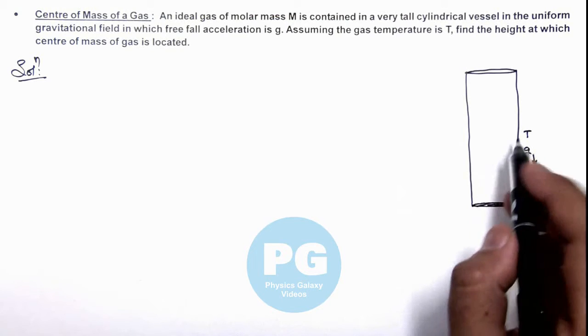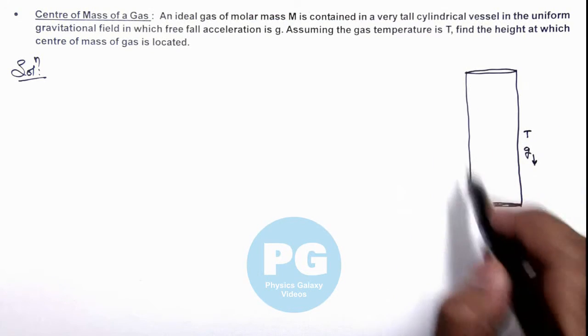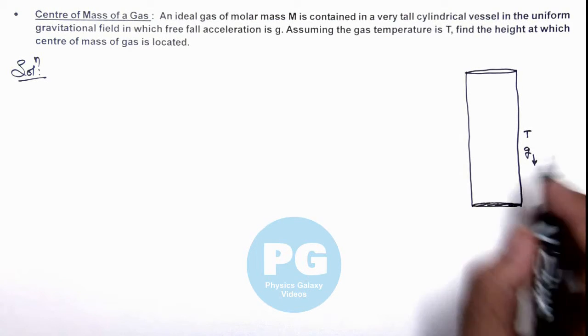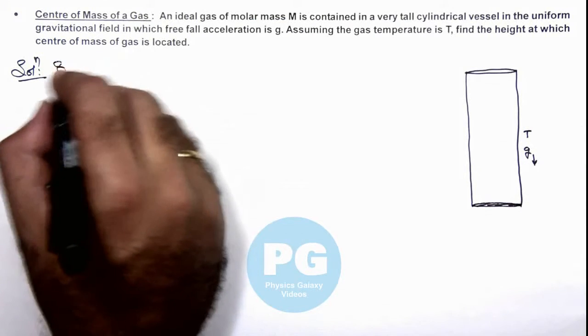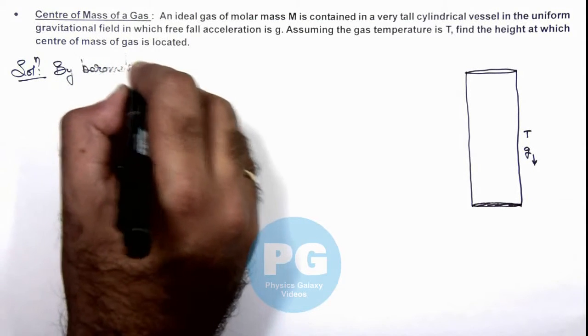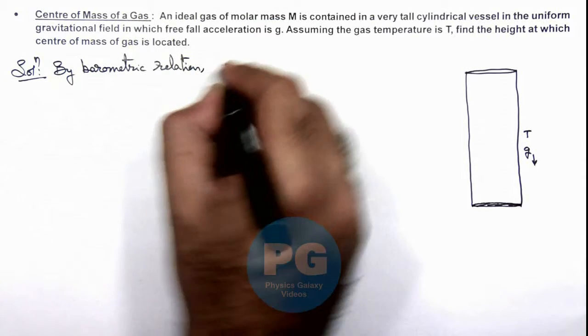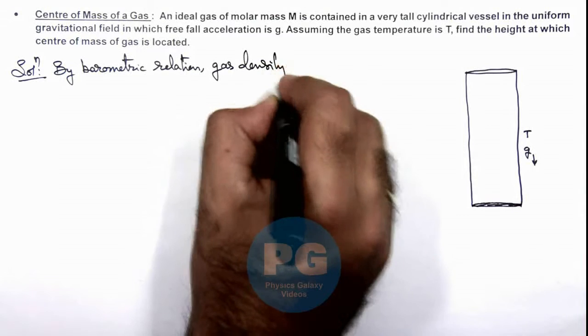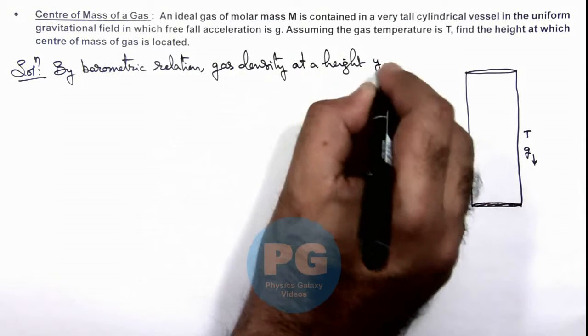If we wish to find out the center of mass of gas in this container, we need to consider an element because as g is constant, density varies. And we know by barometric relation, gas density at a height y is...